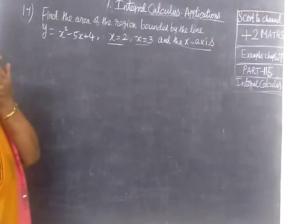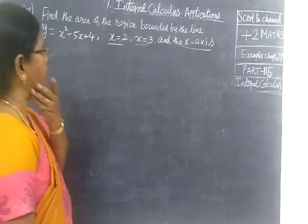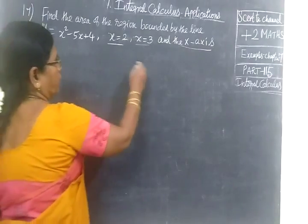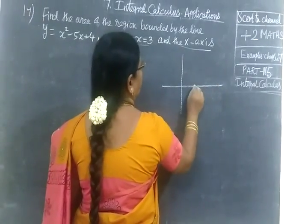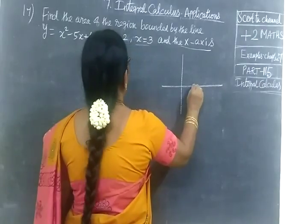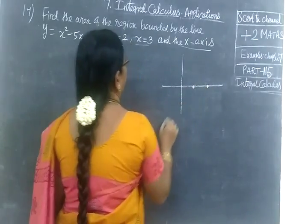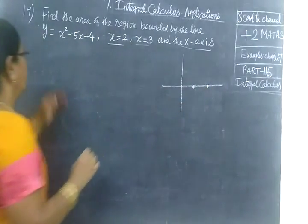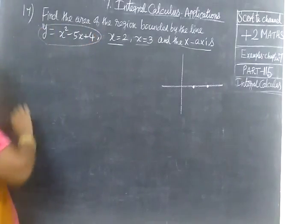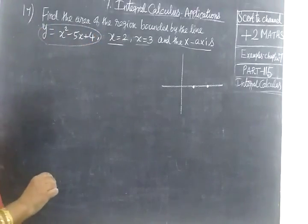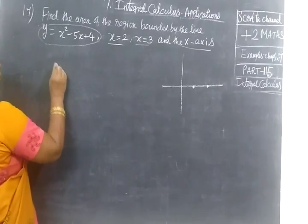Now we want to find the area of the region. The limit is x equal to 2, then x equal to 3. And given is a parabola. The parabola and the point of intersection can be found.